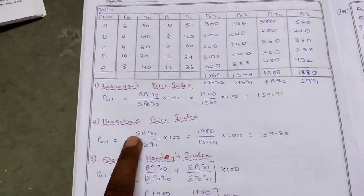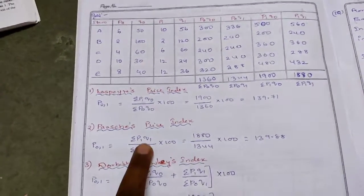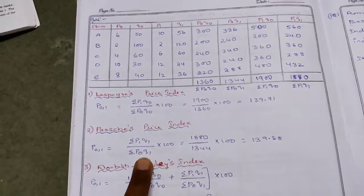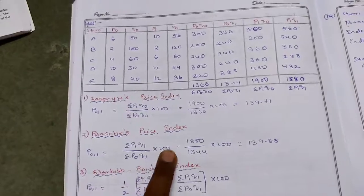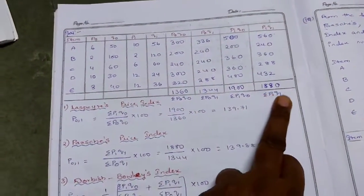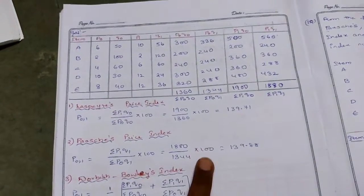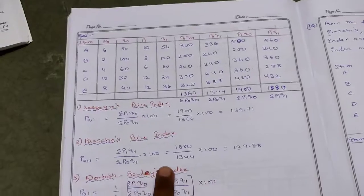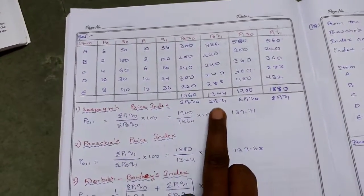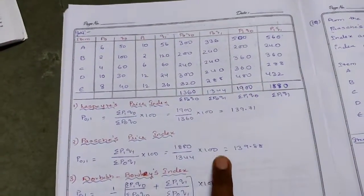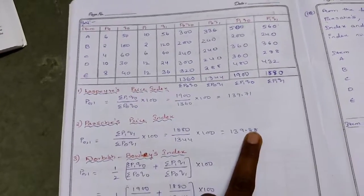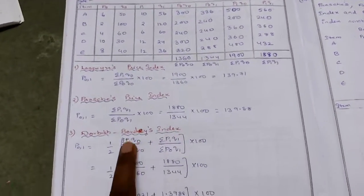Next, Paasche's method: P01 = (ΣP1Q1 / ΣP0Q1) × 100. ΣP1Q1 = 1880, ΣP0Q1 = 1344. So 1880 / 1344 × 100 = 139.88.